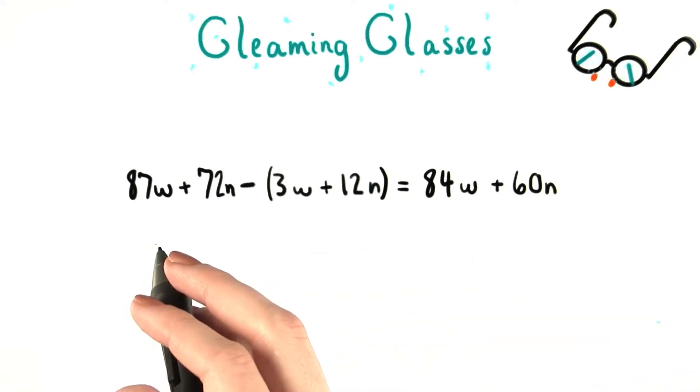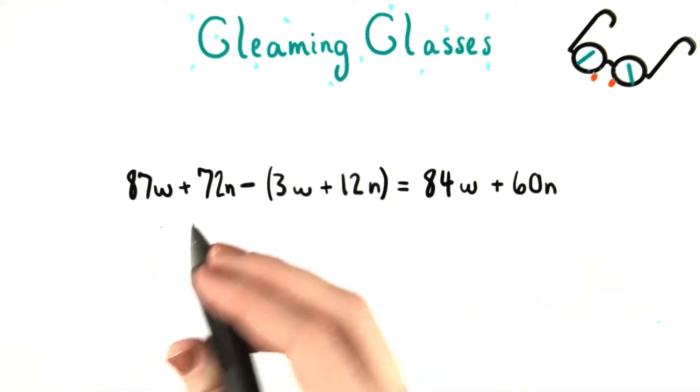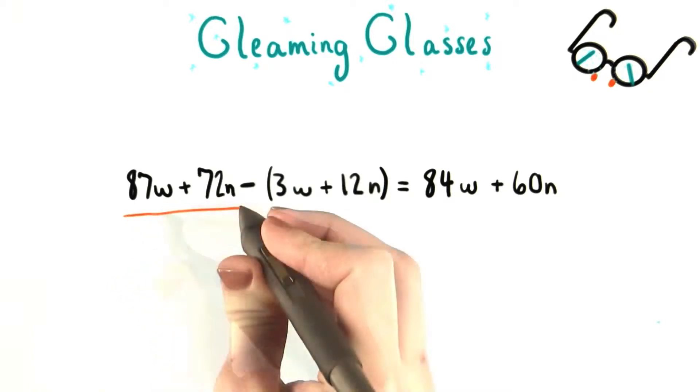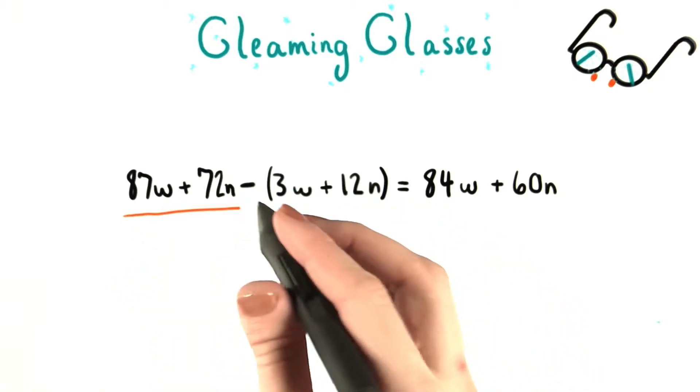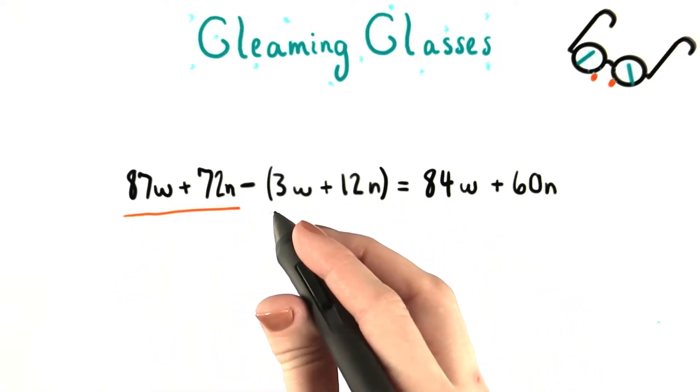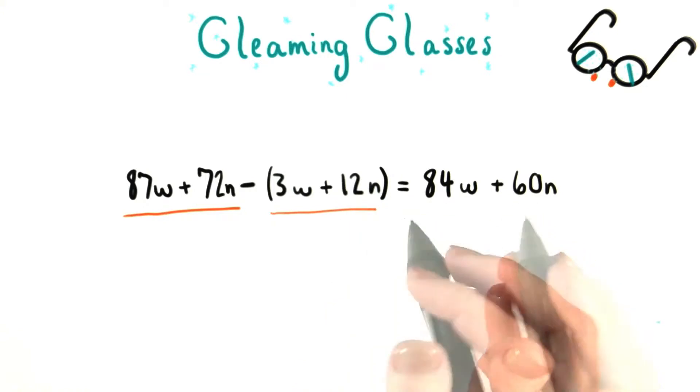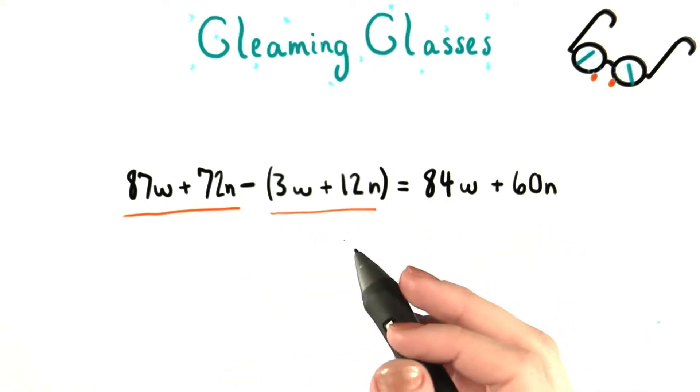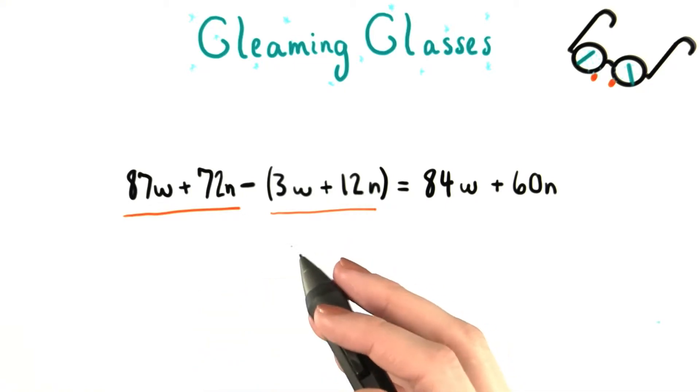When we were working with equations for Grant last time, what we were really doing was taking one expression, 87w plus 72n, and subtracting from it another expression, 3w plus 12n. We worked with parentheses in a kind of new way. So let's take a second and talk a bit more explicitly about how to add and subtract polynomials.